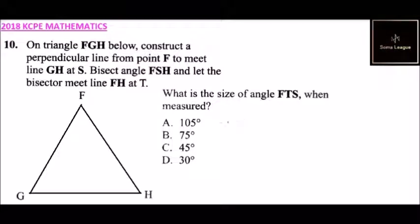So to bisect, you need to put your compass. You put the sharp end at F and you make two marks here. You can use those two marks to make other marks.